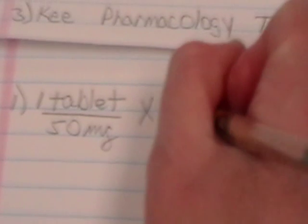We will set up our beginning fraction. Our numerator will be one tablet over 50 mg and we have 50 mg in the denominator of our second fraction. The numerator of our second fraction is going to be 75 mg, which is what our physician has ordered. And that will just be over one.